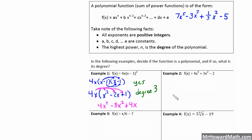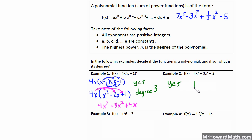Example 2 is pretty simple — we don't have to expand anything out. We have an x to the 5th term, an x squared term, and a constant. Our exponents are positive integers, just like they're supposed to be, so everything is in order. Yes, this is a polynomial, and the degree is 5 — it is a degree 5 polynomial.